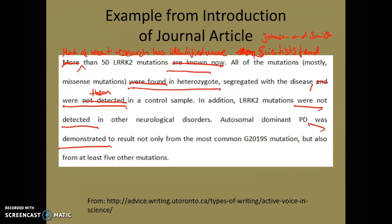So taking out the passive and inventing an actor. For the next sentence, 'In addition, LRRK2 mutations were not detected in other neurological disorders,' you could say 'In addition, these authors — or they — did not detect LRRK2 mutations in other neurological disorders.' I struggled a bit with 'Autosomal dominant PD was demonstrated' since I wasn't sure who was doing it, but the first three sentences show clearly how making language more active creates a much more engaging narrative for your reader, especially in the introduction.